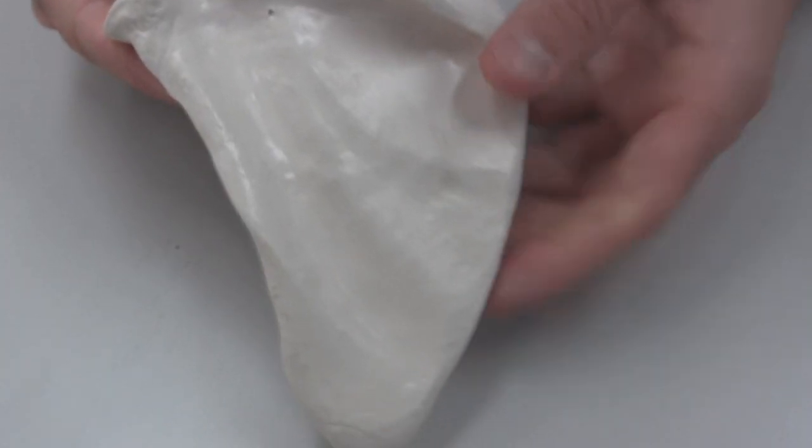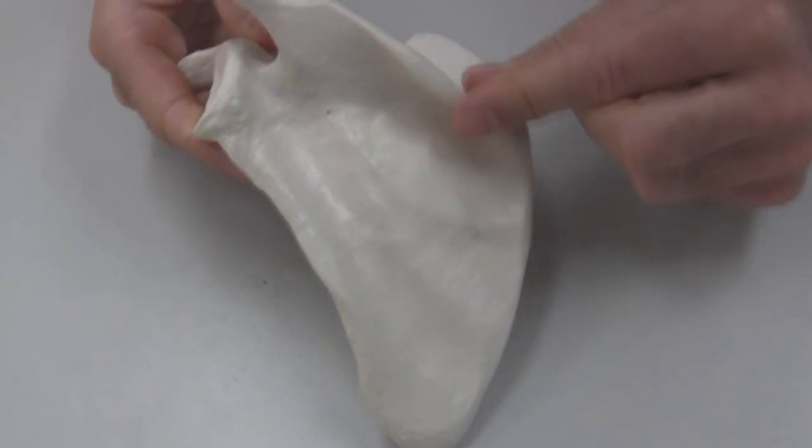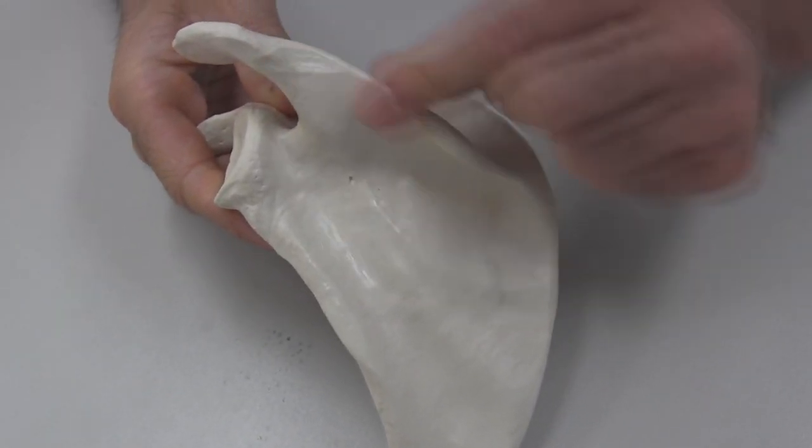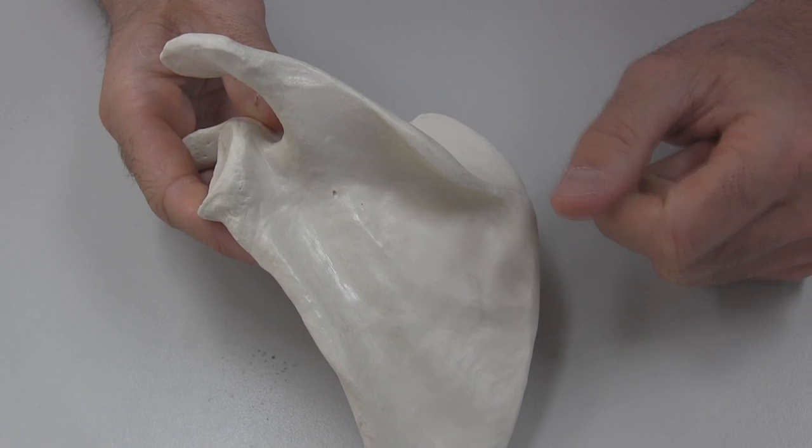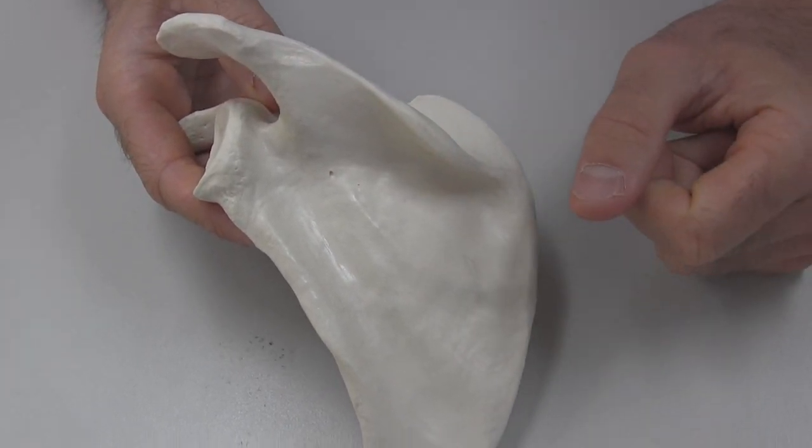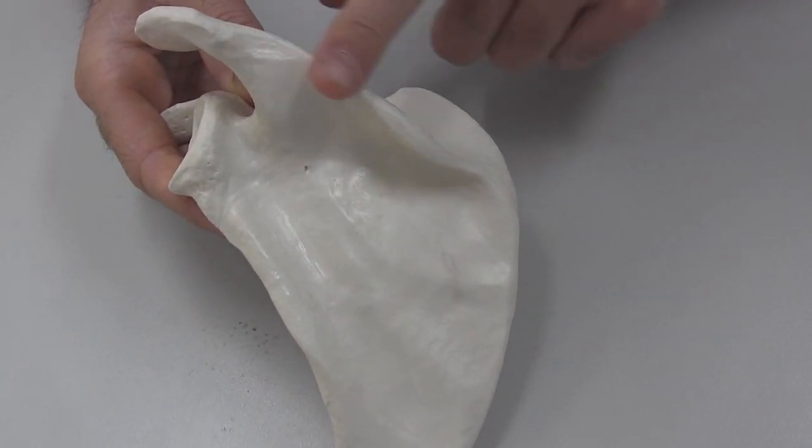If we look at the back of the scapula, the scapula's spine runs across the back of the scapula. You can even feel that if you feel your shoulder across the back. The back ridge of your shoulder, you'll actually be feeling your scapula's spine.